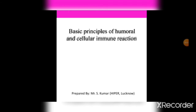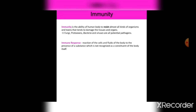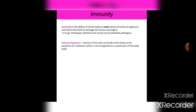Good morning. Today I am going to start a topic from Unit 3: Basic Principles of Humoral and Cellular Immune Reaction. Before studying cellular or humoral immune response, let us first look at the definition of immunity. Immunity is the ability of a human body to resist almost all kinds of organisms and toxins that tend to damage the tissues and organs.